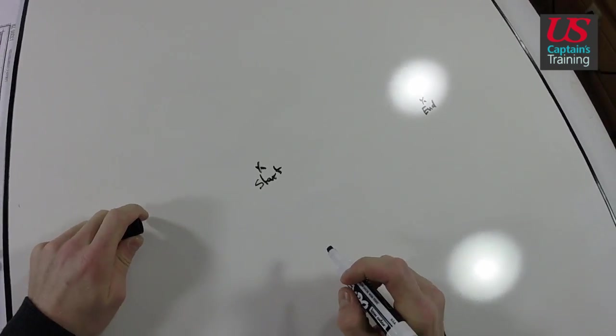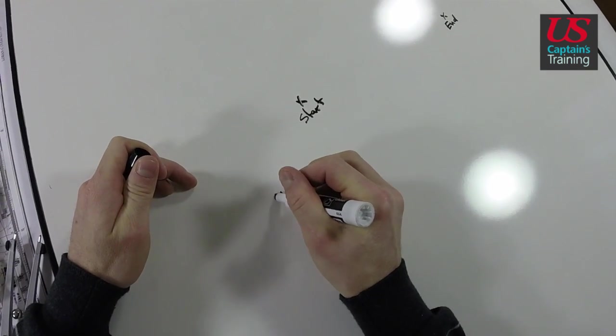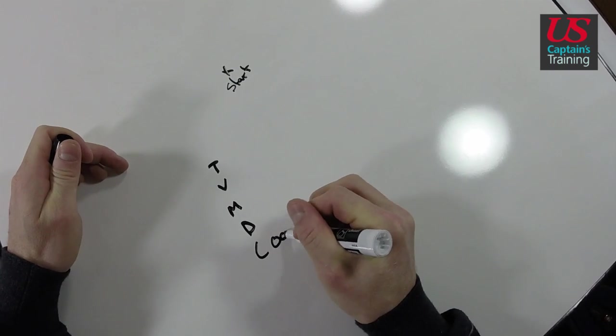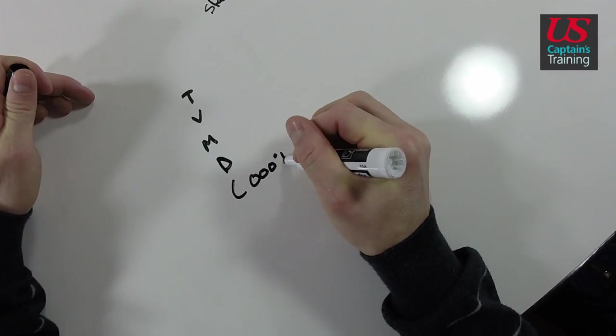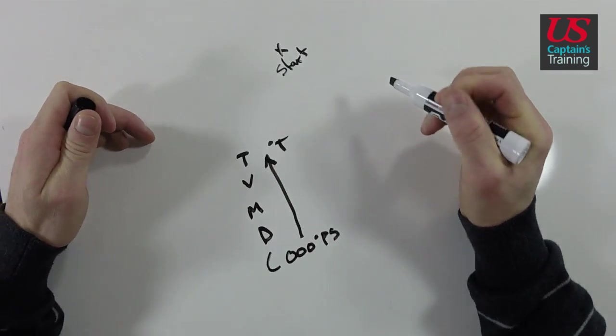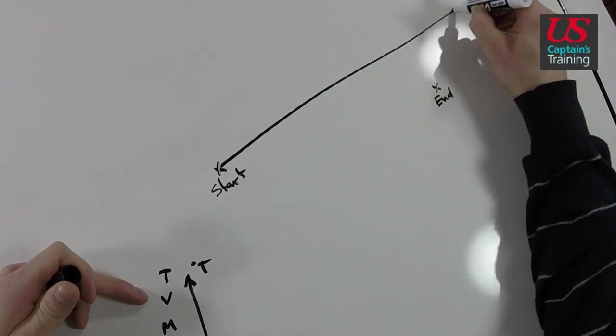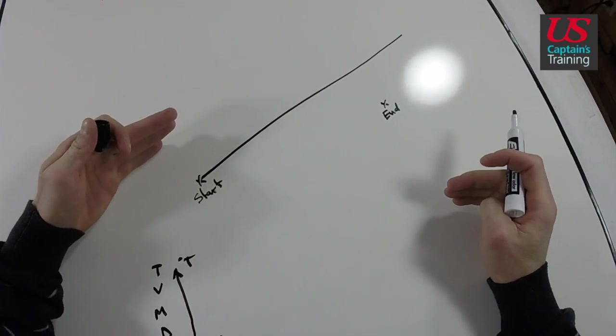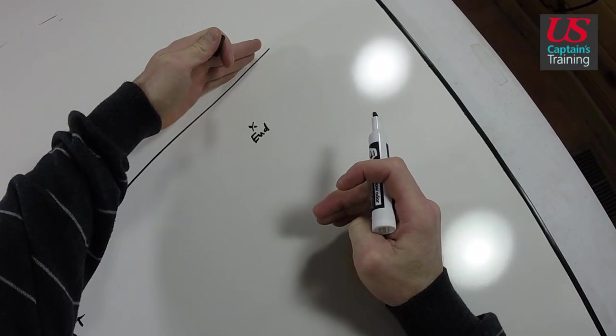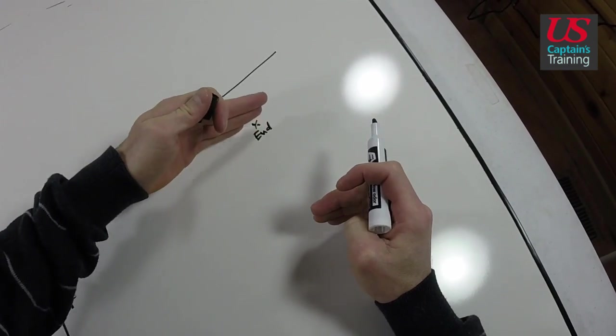But we set off on a course. The problem gives you a course in degrees PSC, and you have to correct that course using TVMDC. You correct that course up to degrees true, then plot it from the starting point out. After a certain amount of time at a certain speed, you actually ended up here. What happened? A current pushed you, and we're going to solve for that current.